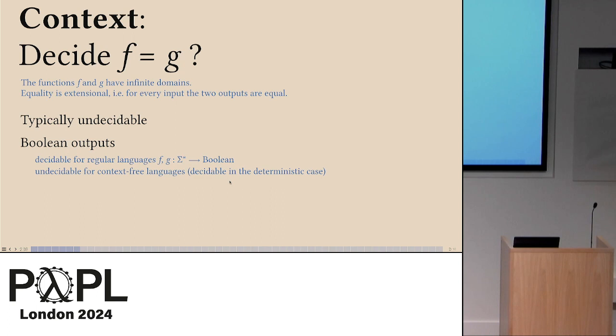If you go slightly beyond regular languages, it doesn't work anymore. For example, if you go to context-free languages, this has been known to be undecidable for half a century at least. An interesting special case is deterministic pushdown automata, the limits of decidability, approved by Senizelk. But basically, if you think about the inputs being strings, then regular languages are almost the only thing that you can do. Now, let's make it even harder. Let's consider non-Boolean outputs.